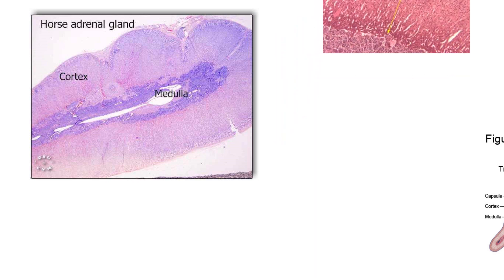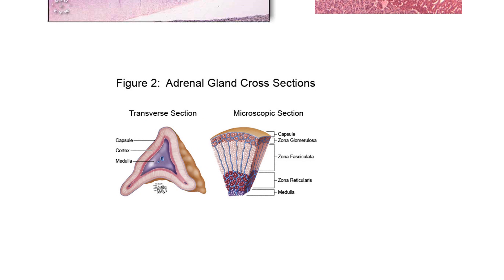Here's another histological section of the adrenal gland. From the capsule inward toward the medulla, it looks very different — as the horse one did as well. And here's a transverse section showing the medulla looking so different from the cortex. You should know the cortex has three layers. In an introductory course I won't ask you to name the zona layers, but you should know there are three layers to the cortex and they each produce different hormones.